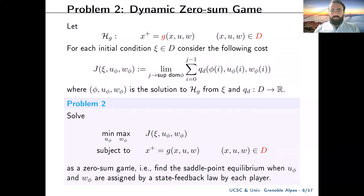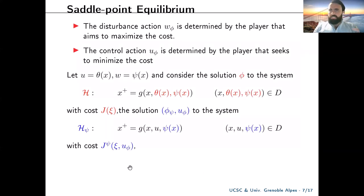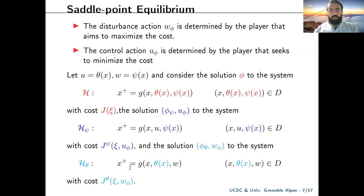The second problem has a challenge: solutions are not necessarily complete due to the playable set D, because solutions can jump outside of D and stop evolving. We analyze the case where w is determined by the player aiming to maximize the cost and u by the player seeking to minimize. We define strategies for each player by feedback laws theta and c. When both players play optimally, the system is called H with cost J; when the controller doesn't necessarily play optimally, we refer to system Hc with cost Jc; and when the disturbance doesn't necessarily play optimally, system H-theta with cost J-theta.